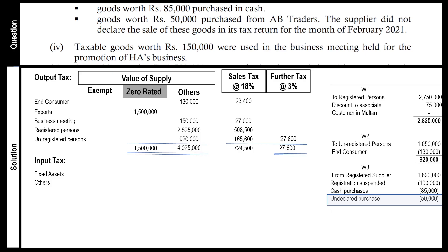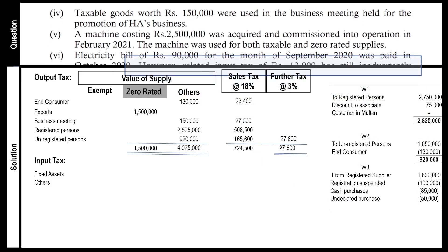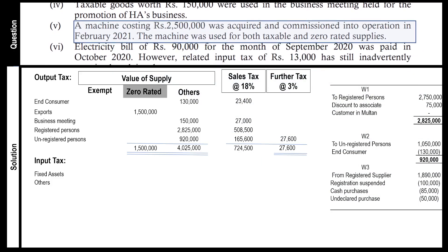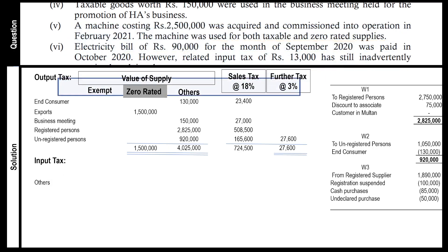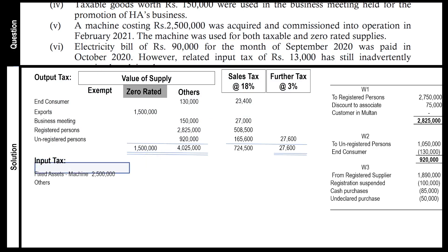The next information is about fixed assets. A machine costing 2.5 million has been purchased. Please note that the machine has been used for both taxable and zero-rated supplies. Mention 2.5 million as the cost of the machine — we will calculate sales tax on it later.